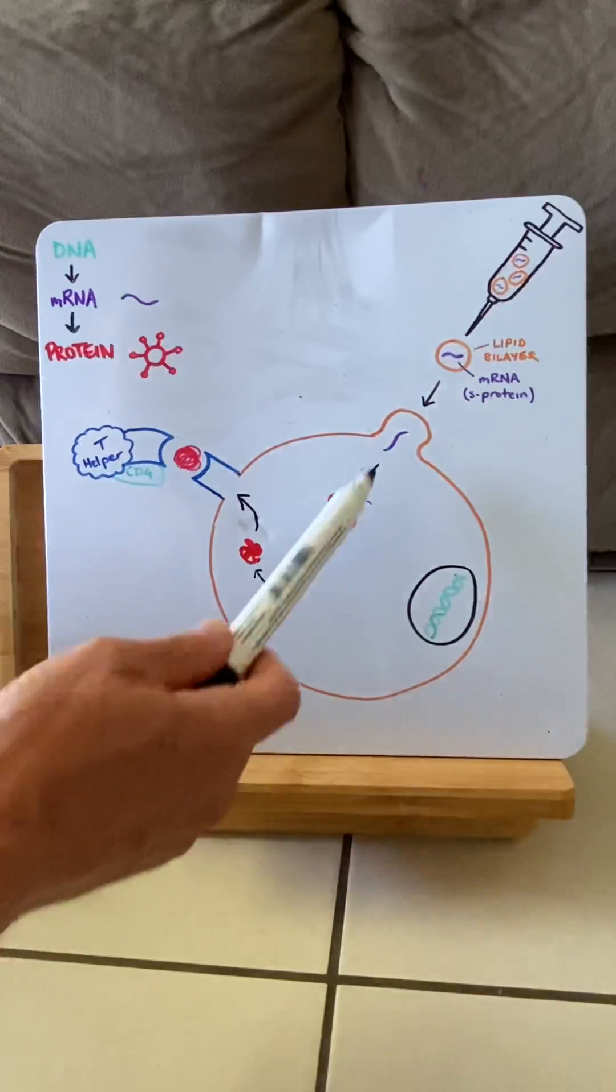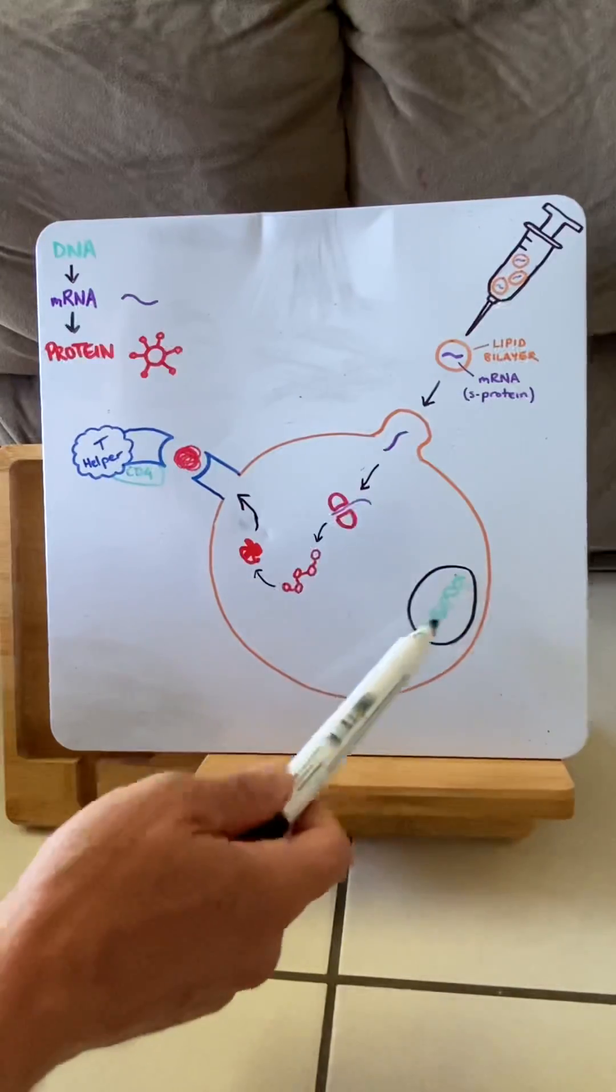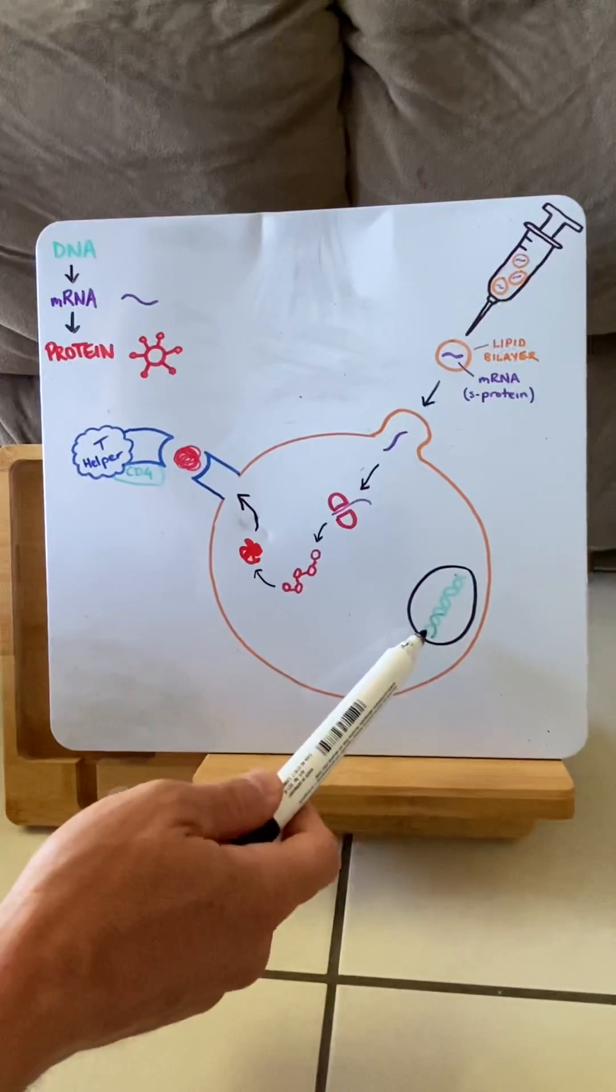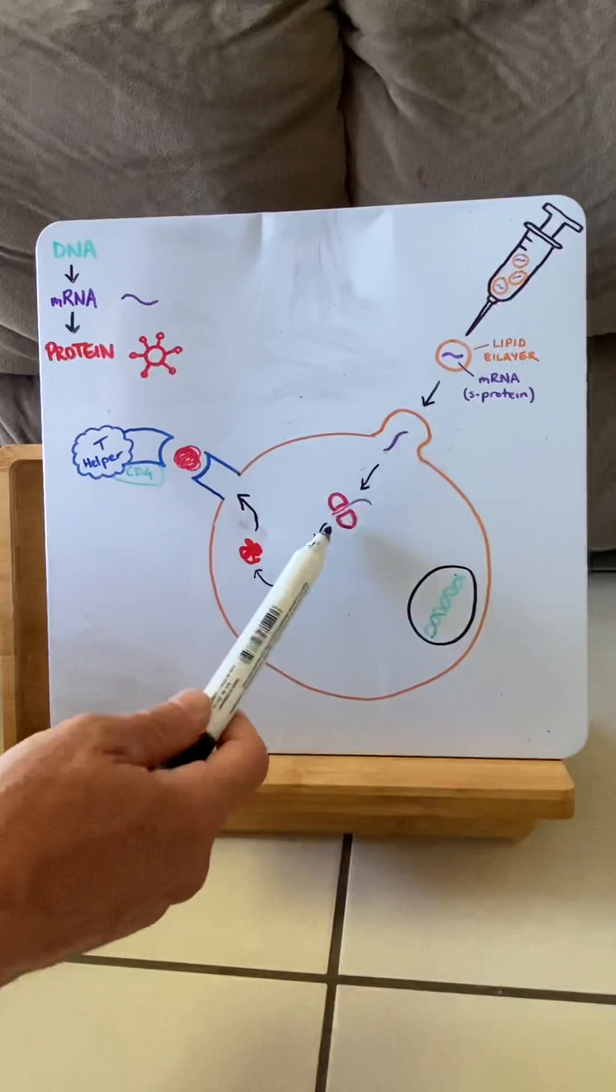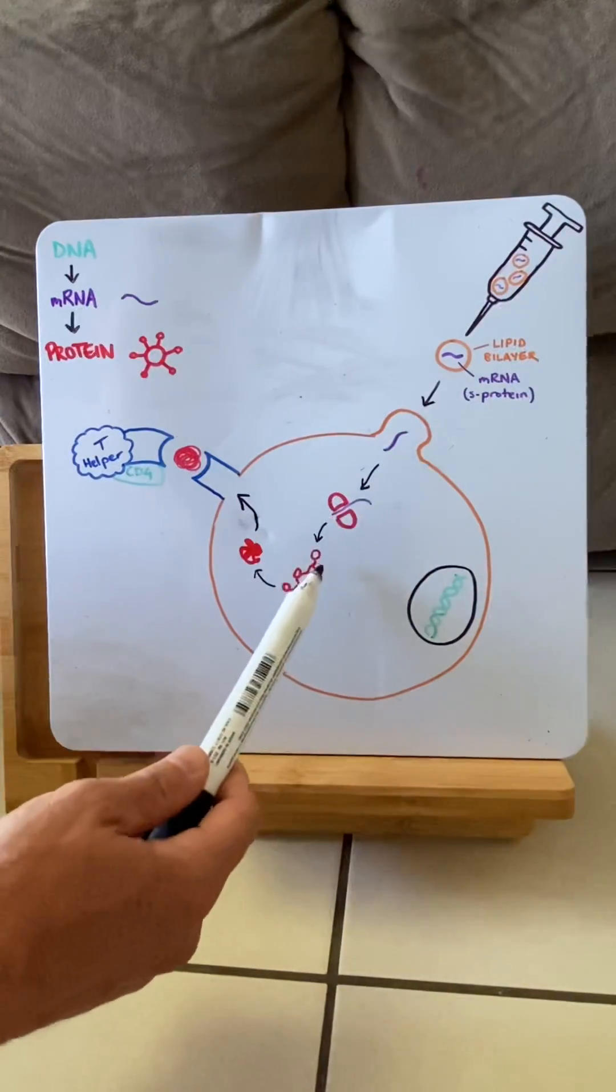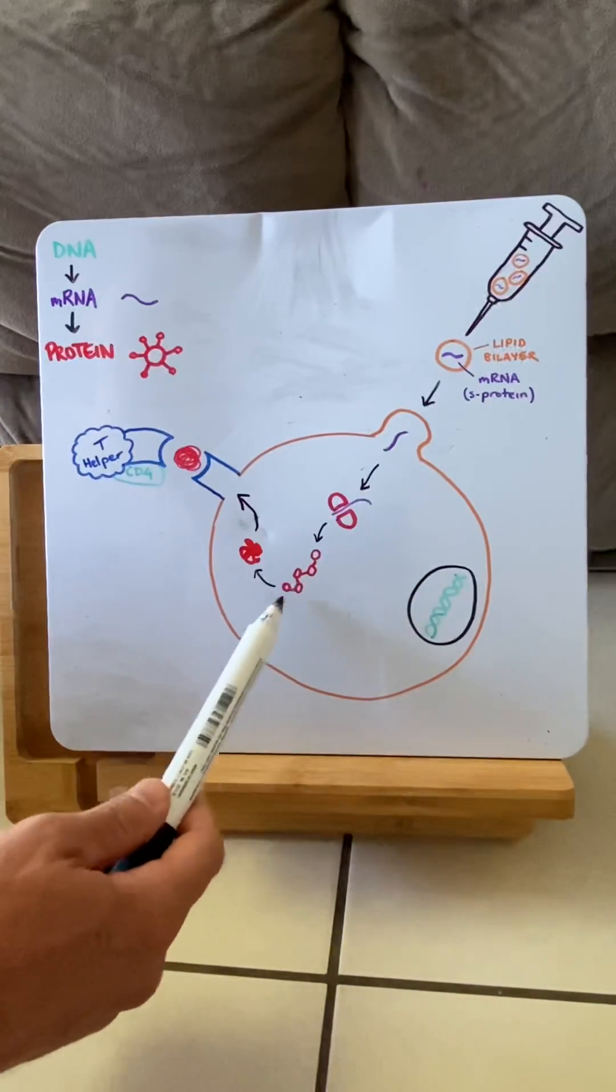Now, this mRNA does not go to our DNA, does not go to our nucleus and intercalate with the DNA. It simply goes to ribosomes where it gets read, turns into a string of amino acids, and then folds into a protein.